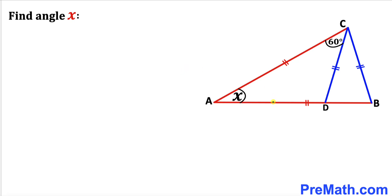Welcome to pre-math. In this video we have got two isosceles triangles. The first one is the red isosceles triangle ABC and the other isosceles triangle is the blue one BCD. They have been put together as shown in this diagram such that angle ACD is 60 degrees, and we are going to calculate angle X.